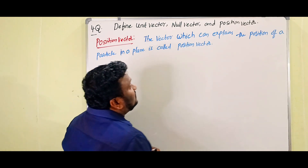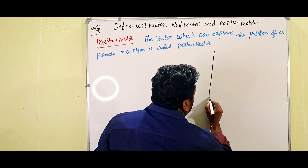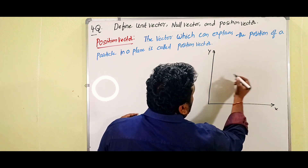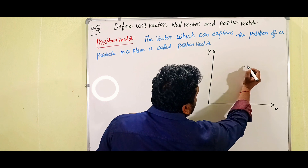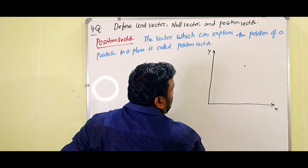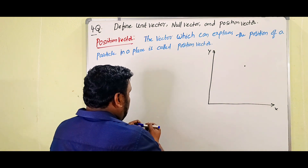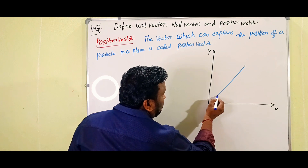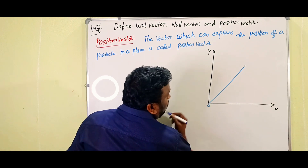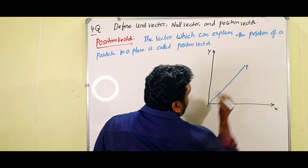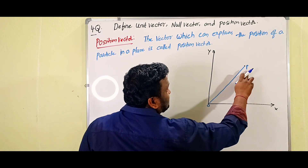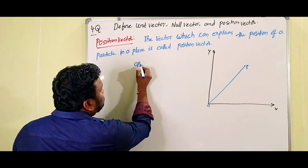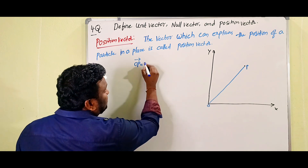Look here children. Now we have a two-dimensional x-y plane. Here one particle is present at some position. We have to explain the position of the particle with respect to x and y. For that, we take one vector from the origin O to the particle P. So O is the origin and P is the particle, and OP is the position vector, shown as r.